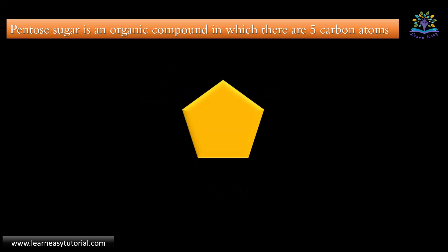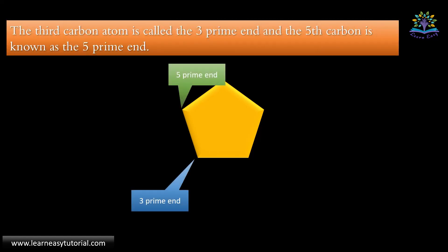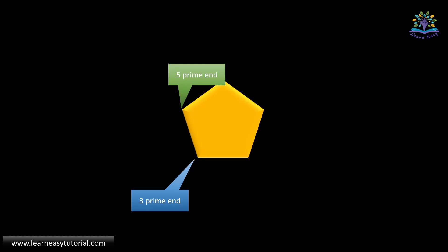The third carbon atom forms the three prime end and the fifth carbon is known as a five prime end. The directionality of DNA as well as the replication process is specified in terms of these ends.